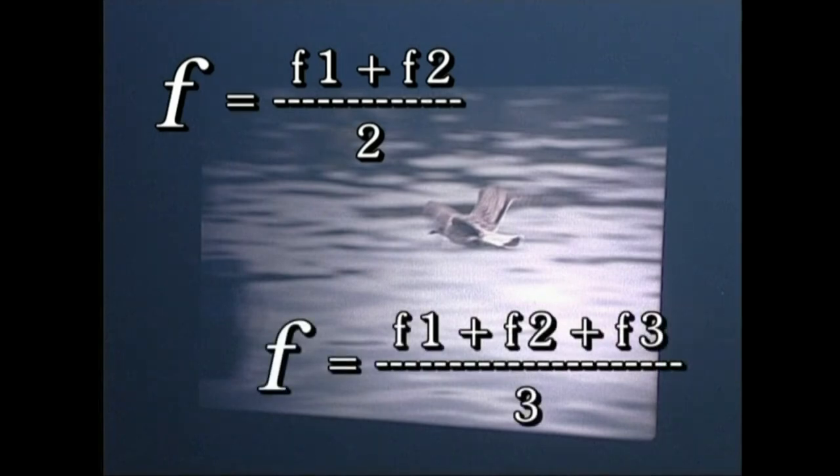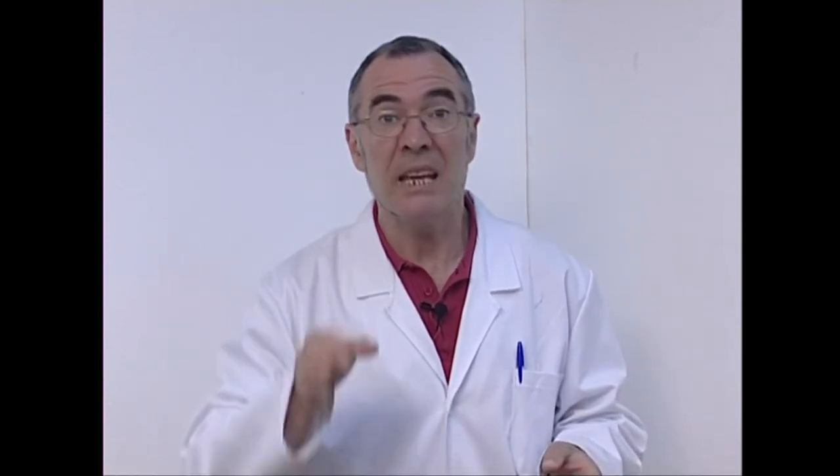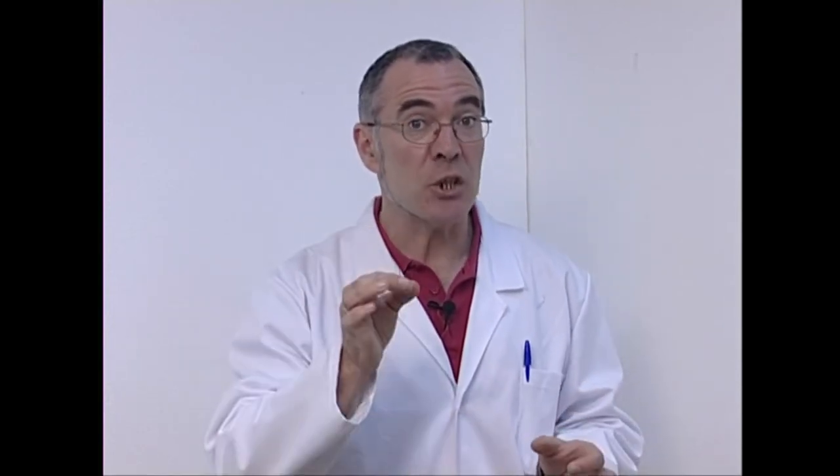Hiru argazki balira gain jarri nahi ditugunak, esposizio denbora dagokionaren erena izango litzateke. Dena dela, araua zorrotz betetzen baldin badugu, gerta dakiguke bi irudiak maila berdinean nahastea, eta lortu nahi dugun efektua ez ere zehatz gelditzea. Irudietako bat nabarmendu nahi baldin badugu, esposizio denbora luzeagoa eman behar diogu.